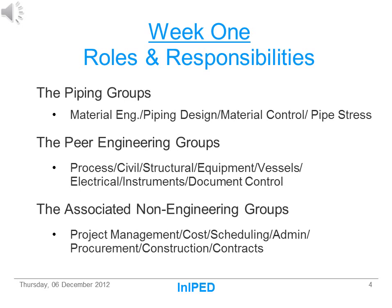The next group consists of other peer-level engineering groups that piping must interface with on the average project: process, civil, structural, mechanical equipment, vessels and tanks, electrical, and instrumentation. The third group includes non-engineering groups involved in any project, as well as project management. The roles and responsibilities of each of these groups are important to know and understand. The piping engineering lead must know what these groups owe piping, and what piping owes these other groups, in order to complete the project.